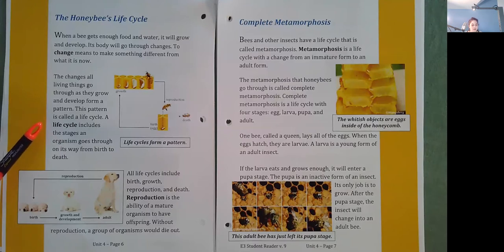A life cycle includes the stages an organism goes through on its way from birth to death. All life cycles include birth, growth, reproduction, and death. Reproduction is the ability of a mature organism to have offspring. Without reproduction, a group of organisms would die out.